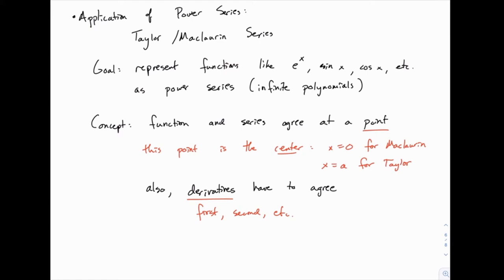When we pick this point, if the point we use is x equals 0, then we'll call that a Maclaurin series. A Taylor series is more general — it can work at any point. The Maclaurin series is just when x equals 0, so it's simply a naming difference. Historically the Maclaurin series was developed first, and the Taylor series is an extension. If you let x equal 0, it's still a Taylor series, but more specifically we could call it a Maclaurin series. If you see a Maclaurin series and it doesn't specify the point, you just need to know that x equals 0 is the center point.